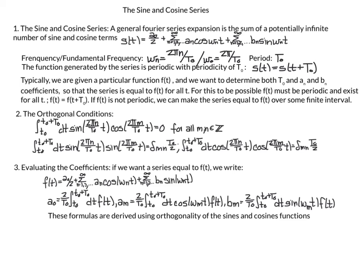Typically we're given a particular function f(t) and we want to determine both T_0 and the coefficients a_n and b_n in front of the different frequencies of sines and cosines so that the series equals f(t) for all t. For this to be possible, f(t) must be periodic and exist for all t, so f(t) = f(t + T_0). If f(t) is not periodic, we can make the series equal to f(t) over some finite interval.